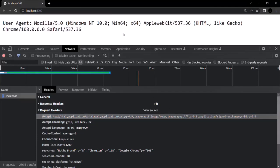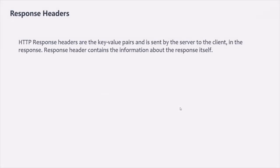Now let's talk about response headers. HTTP response headers are key-value pairs, just like HTTP request headers, and they are sent by the server to the client in the response. HTTP response headers include information about the response itself, which can be used by the client to manage the response accordingly. Generally, these response headers are not visible to the end user — they are only intended for information exchange between the server and the client. It is us backend developers who create the response and set the response headers on it.